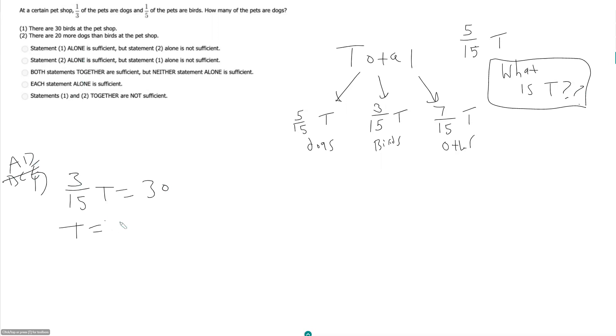Let's actually do that. So T is equal to 30 times 15 over 3. So T is equal to 150. Which means technically our dogs are equal to a third of that, which is 50.